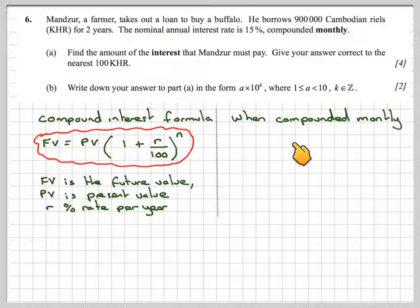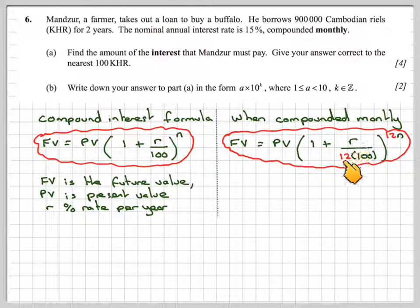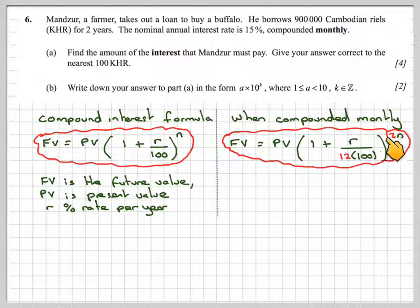When compounded monthly, the formula becomes FV = PV(1 + r/(12×100))^(12n), because there are 12 months in a year and 12 compound periods per year.